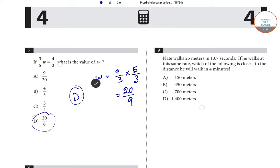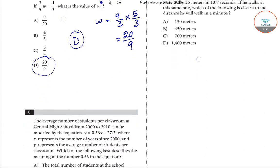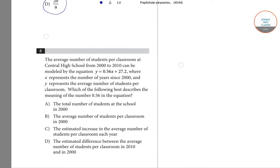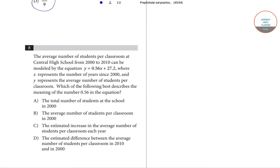Next is question number 8: the average number of students per classroom at Central High School from 2000 to 2010 can be modeled by the equation y = 0.56x + 27.2, where x represents the number of years since 2000 and y represents the average number of students per classroom. Which of the following best describes the meaning of the number 0.56?